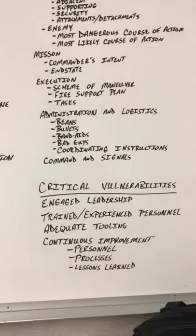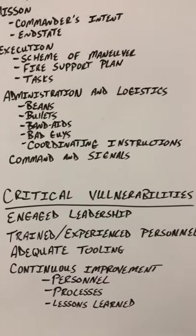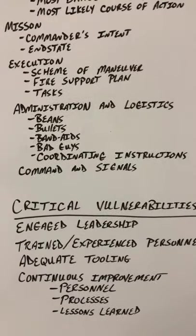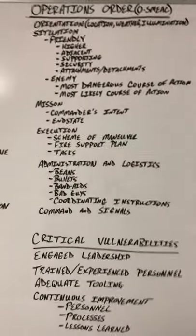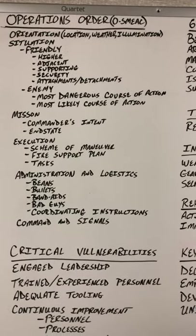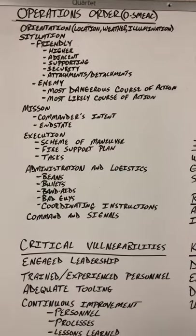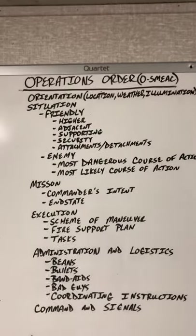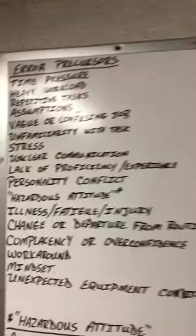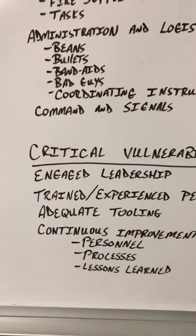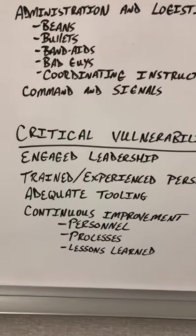Bad guys are the people demonstrating hazardous attitudes and poor human performance resulting in negative quality or safety issues. You need to decide how you'll deal with them — counsel them, run them off site — and know your trigger points for immediate removal from site. Coordinating instructions apply to two or more companies working in the same workspace, such as scaffolders, insulators, and crew members working in the same turbine enclosure. Critical vulnerabilities to successfully execute the operations order are: engaged leadership, trained and experienced personnel, adequate tooling, and continuous improvement of personnel, process, and application of lessons learned.